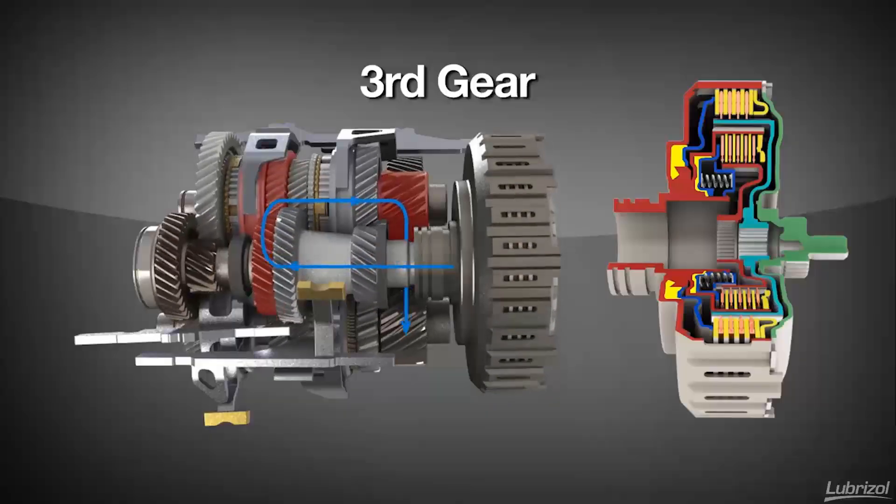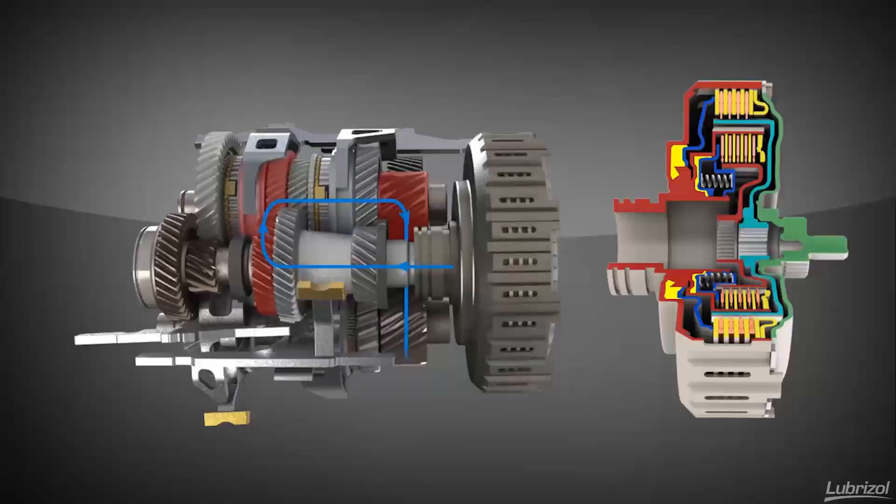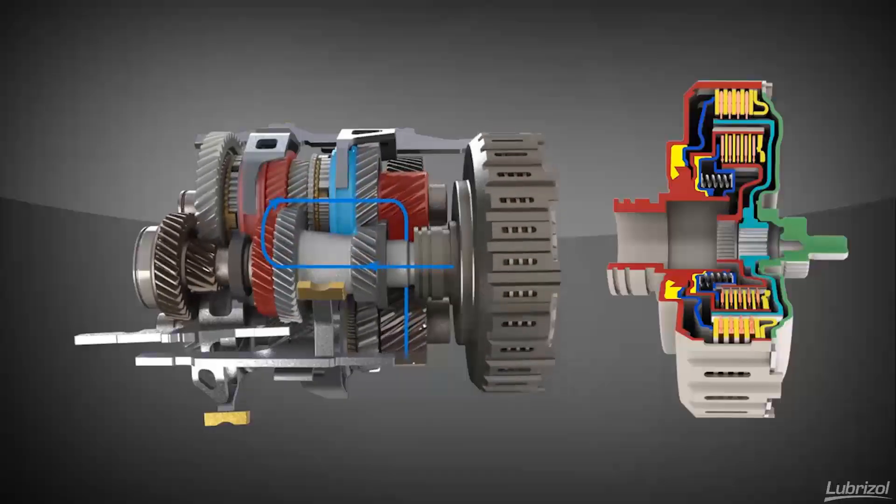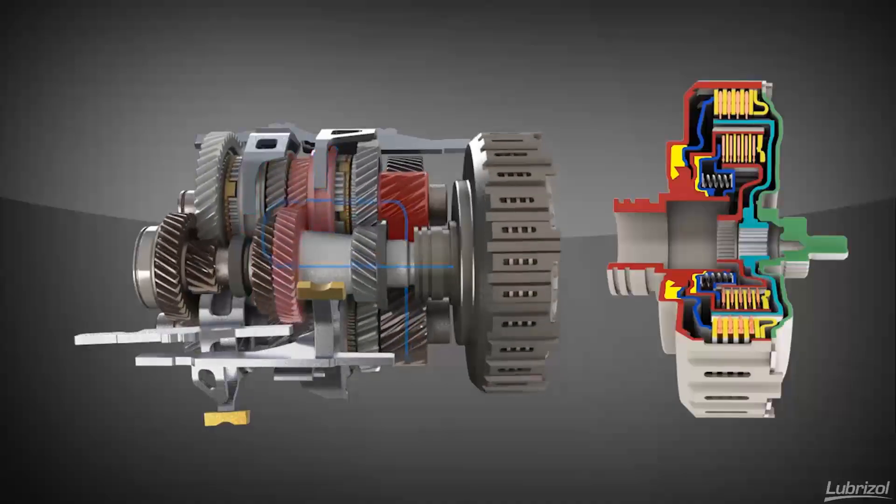This back-and-forth power flow between the outer and inner clutches continues throughout the gear ratios, as the shift fork system continuously anticipates the next needed ratio and pre-selects the appropriate gear.